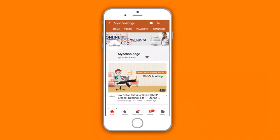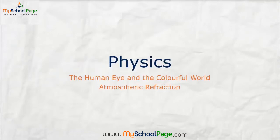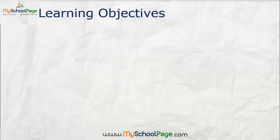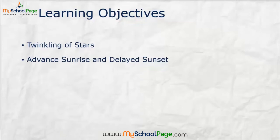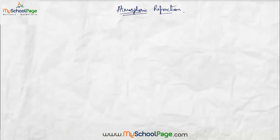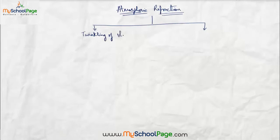Subscribe and press the bell icon to never miss a video from my school page. This is Class 10 CBSE Physics Chapter: The Human Eye and the Colorful World. After watching this video, you will be able to understand the reason for twinkling of stars and understand the concept of advanced sunrise and delayed sunset. So let us study atmospheric refraction. Some of the optical phenomena in nature which occur due to atmospheric refraction are twinkling of stars, advanced sunrise, and delayed sunset.